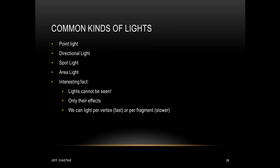To finish out, we're going to take a look at some of the common kinds of lights that you may see. Specifically, we're going to look at the concepts of a point light, a directional light, a spot light, and an area light. Now there's a couple of interesting facts about lights. First of all, light sources cannot be seen, only their effects. In other words, if you place a light source in the scene, you're not going to see some kind of lens flare appear on the screen. Also, you should understand that we can light per vertex, which is really fast, or we can light per fragment, which is slower, but with the increased power in GPUs, this is becoming the common way that we do our lighting.